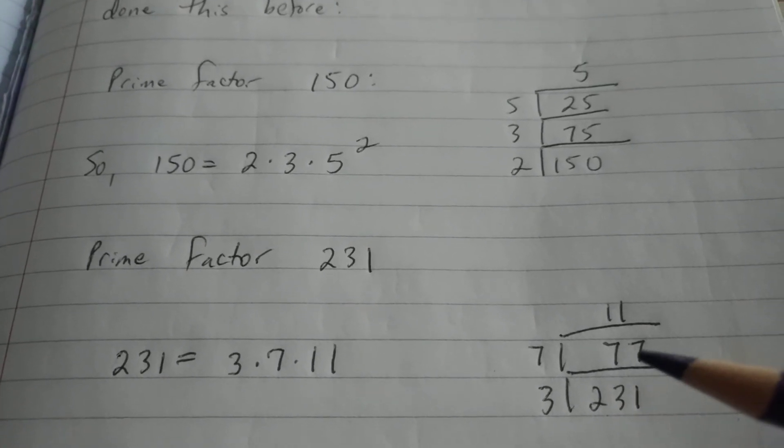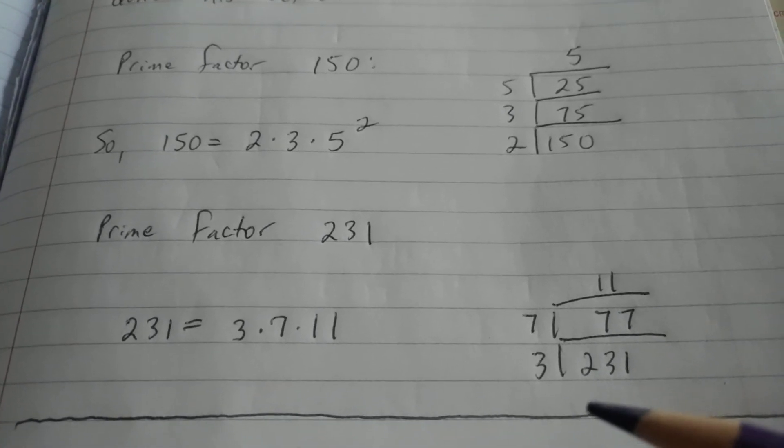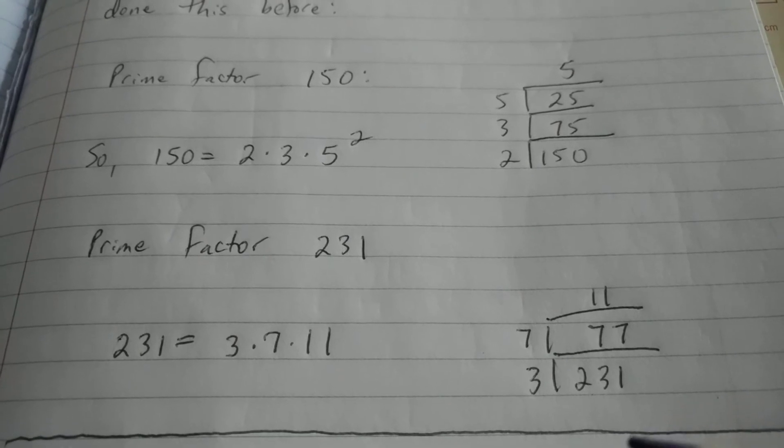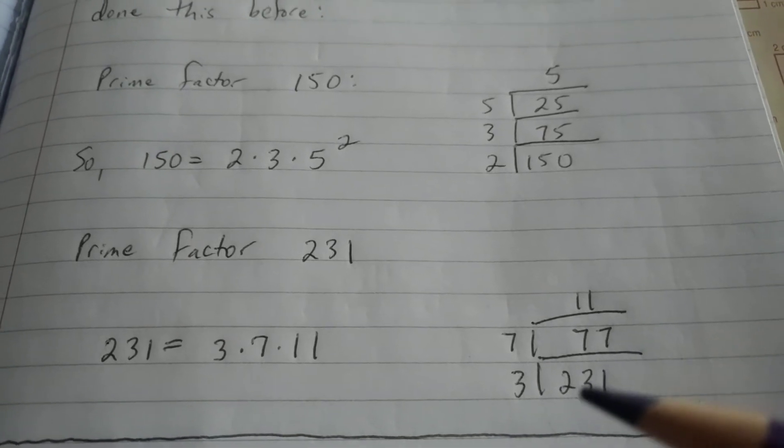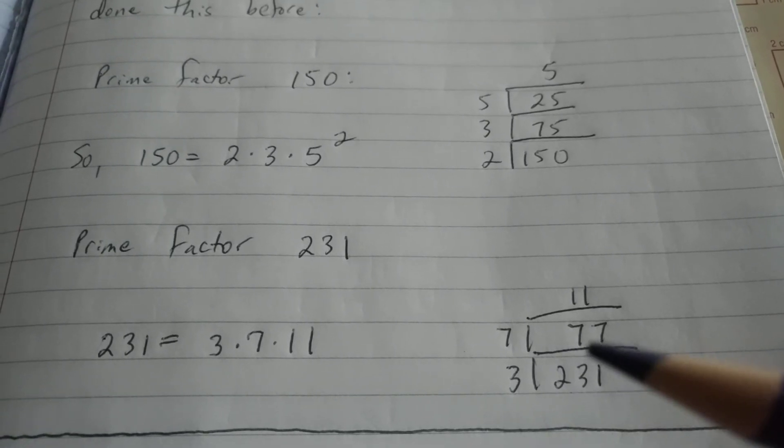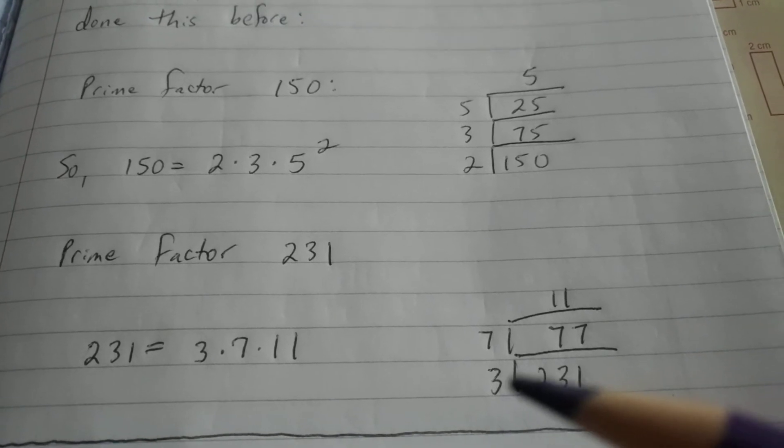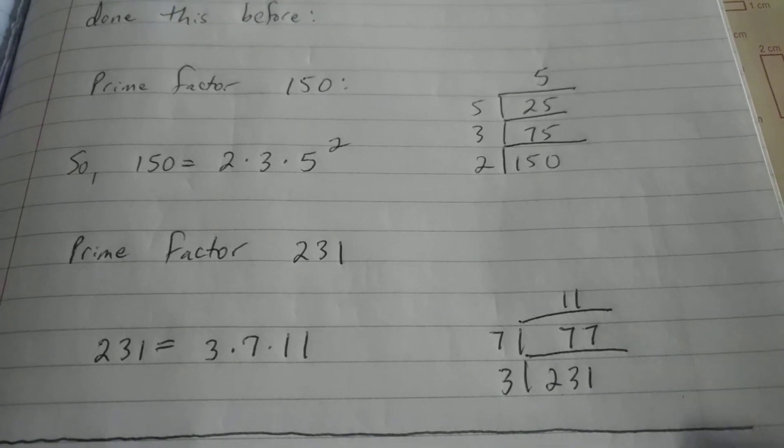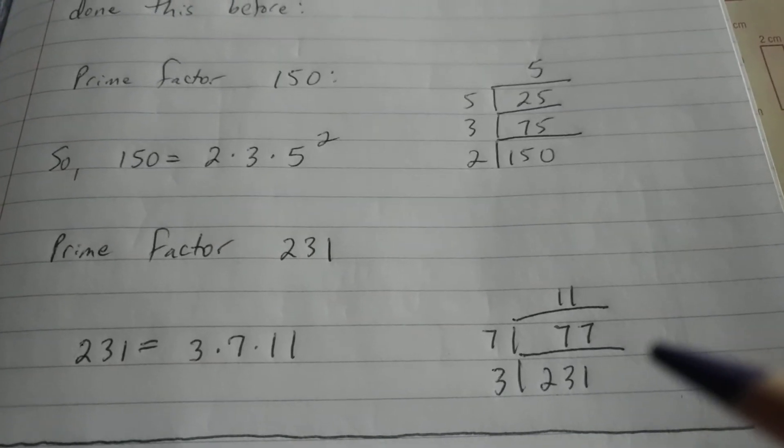3 divides 23 7 times, 3 times 7 is 21. If we think about subtracting 21 here, the difference is another 21. So 3 divides that 21 by 7, so if you check it, 3 times 70 is 210, 3 times 7 is 21. If you add 210 to 21, you do get 231. So 3 divides 231 77 times.